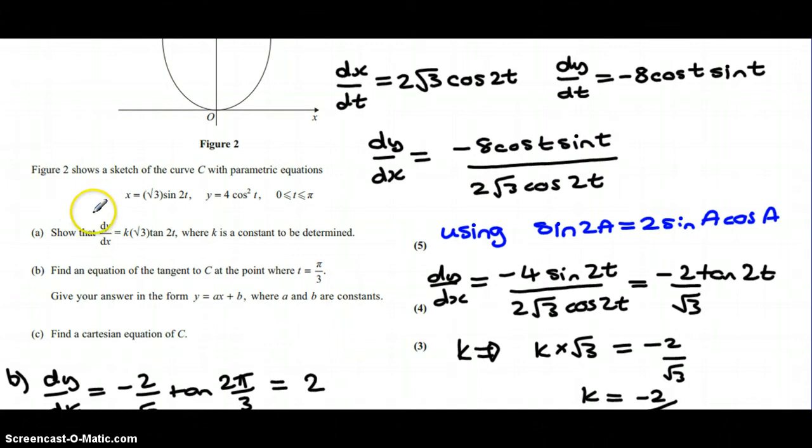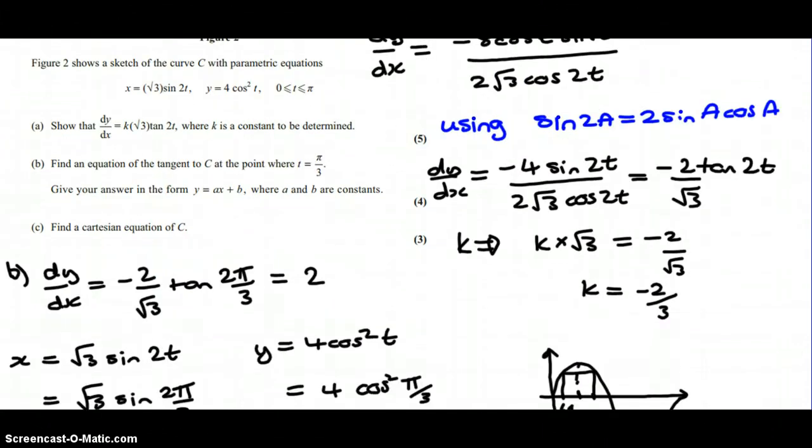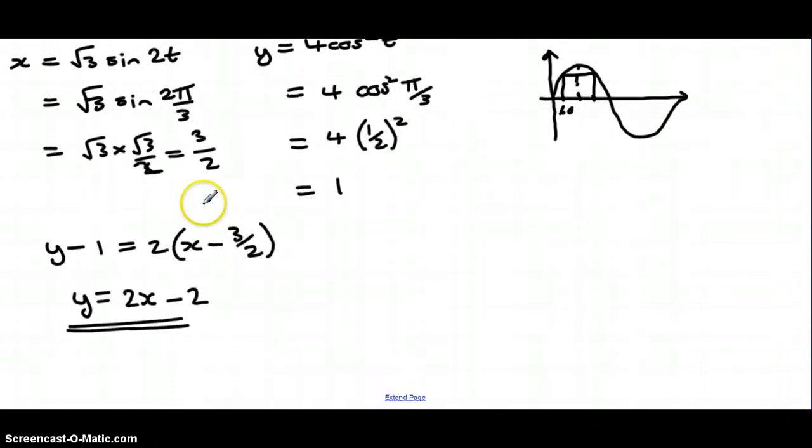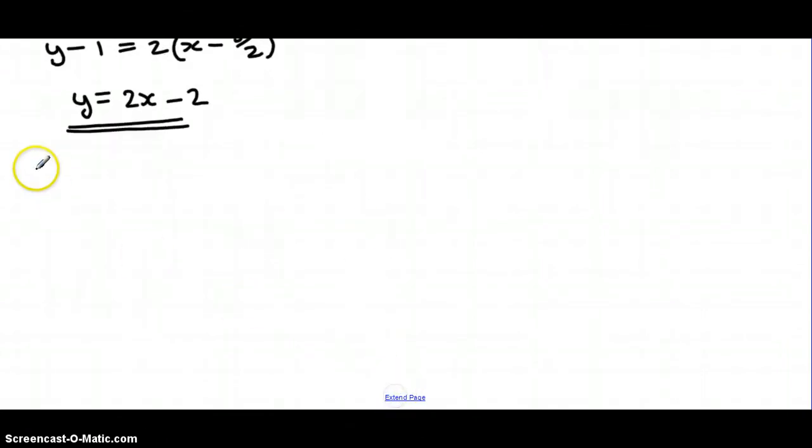Okay, in the final part where three marks, it says find the Cartesian equation of C. It's not a straightforward one, but what we have to do for part c is rewrite our equations, our parametric equations sorry, so we've got those to refer to.